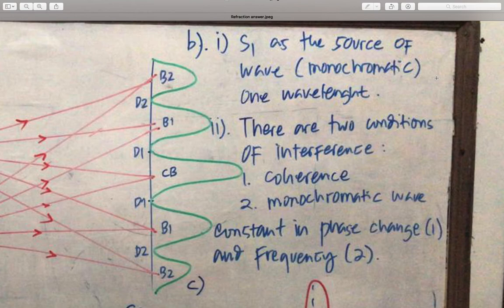First one, coherence. Second one, monochromatic light. Coherence is constant in phase difference. And monochromatic light is the same in wavelength or same in frequency.